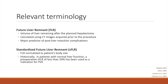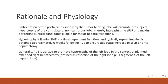Another important term is standardized future liver remnant, or SFLR. This is a modified version of the FLR that is normalized to patients' body size. Historically, in patients with normal liver function, a preoperative SFLR of less than 20% has been used as an indication for PVE. Embolization of the portal veins supplying the tumor-bearing lobe will promote pre-surgical hypertrophy of the contralateral non-tumorous lobe, thereby increasing the SFLR and making borderline surgical candidates eligible for major hepatic resections.